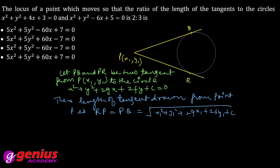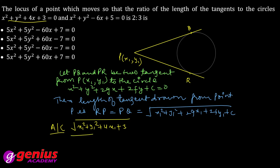According to the question, the ratio given is 2:3. So the first equation becomes: under root of (X1² + Y1² + 4X1 + 3), and the second equation is under root of (X1² + Y1² − 6X1 + 5). According to the question, their ratio is 2 by 3.